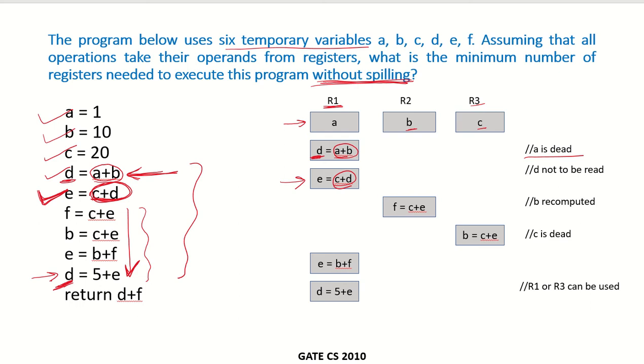Next instruction is f equals c plus e. So if we do f equals c plus e, we can now use register R2 for this.